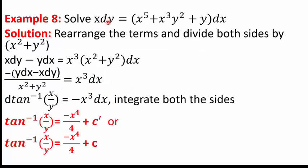In question 8, we solve X dY = (X⁵ + X³Y² + Y)dX. Collecting X dY and Y dX: X dY − Y dX = X³(X² + Y²)dX. Dividing by (X² + Y²) and pulling out the minus sign: −(Y dX − X dY)/(X² + Y²) = X³ dX. The left side is d(tan⁻¹(X/Y)). Integrating both sides: tan⁻¹(X/Y) = −X⁴/4 + C.